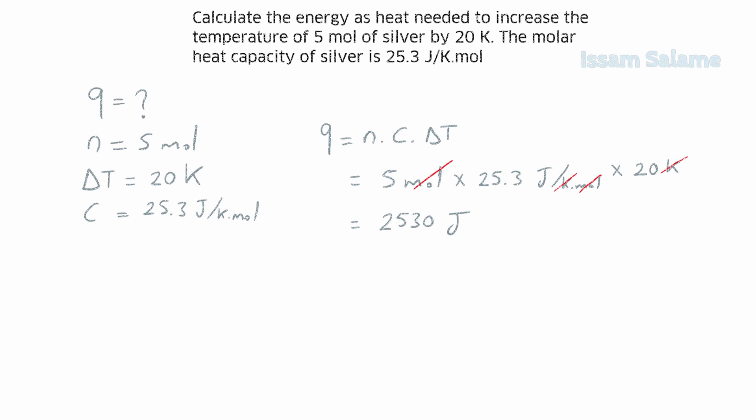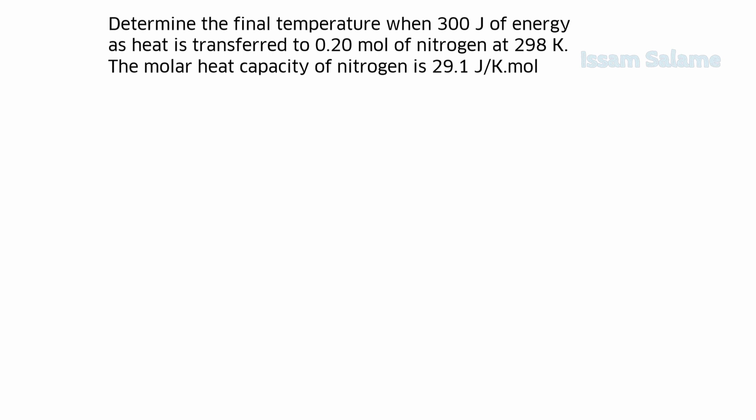Let's practice another exercise. Determine the final temperature when 300 J of energy as heat is transferred to 0.2 moles of nitrogen at 298 Kelvin. The molar heat capacity of nitrogen is 29.1 J per Kelvin dot mole. We start with the given as usual. Final temperature is missing. 300 J is the heat. Number of moles equal to 0.2 moles.